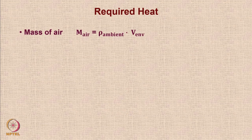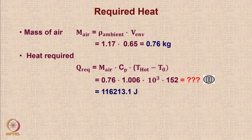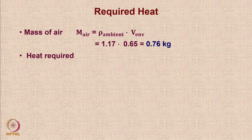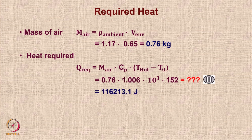For the required heat calculation: the mass of air M_air = ρ_ambient × V, which is 0.76 kg of ambient air. The heat required by the balloon to reach the target temperature is given by Q = M_air × C_p × (T_hot − T₀), where T_hot is the hot gas temperature and T₀ is ambient temperature, and C_p is the specific heat at constant pressure. The heat required comes to around 116,000 joules.